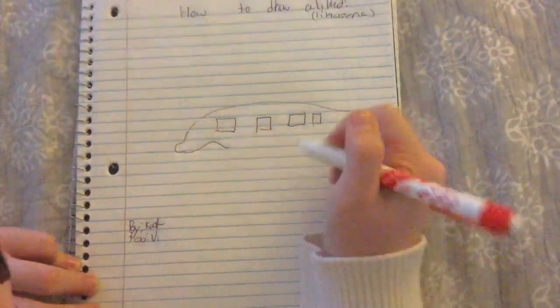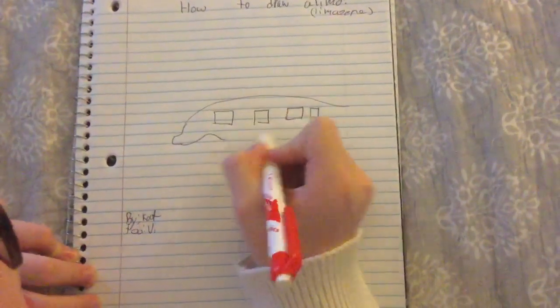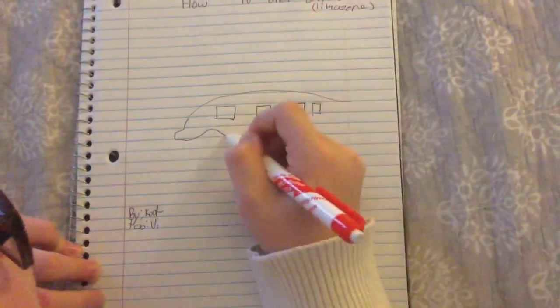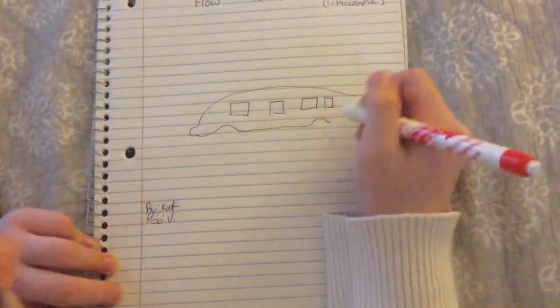So now that we've drawn the front, I like to add like a little bump, and that makes it space for the wheel when we draw it. Perfect.